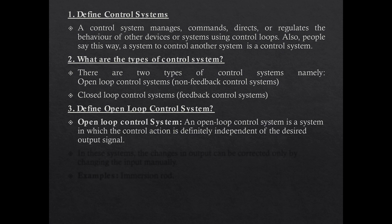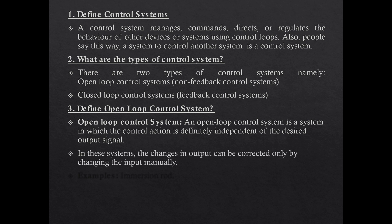Define open loop control system. An open loop control system is one in which the control action is independent of the desired output signal. Whatever controlling or processing action is taken is not dependent on the output — whatever output you get is independent of the processing happening. In this system, changes in output can be corrected only by manual intervention; the system itself cannot correct the input automatically. For example, an immersion rod used for water heating is the best example — it has no feedback and will not correct itself automatically.